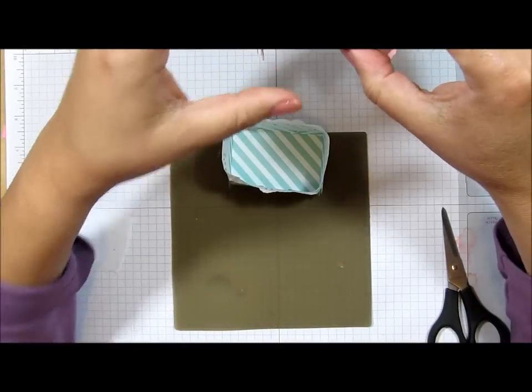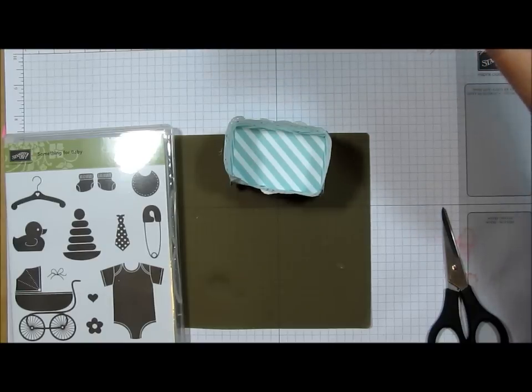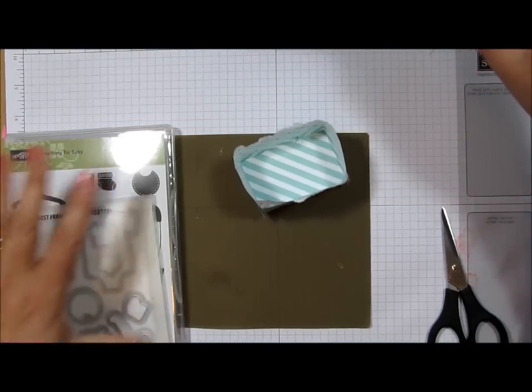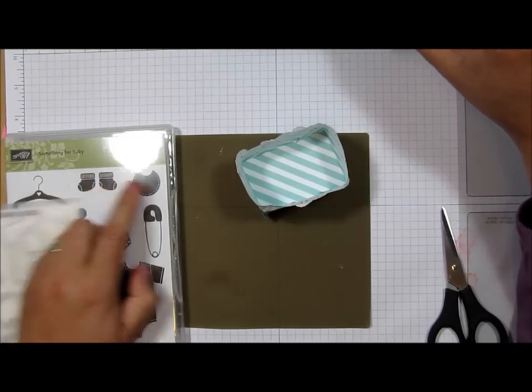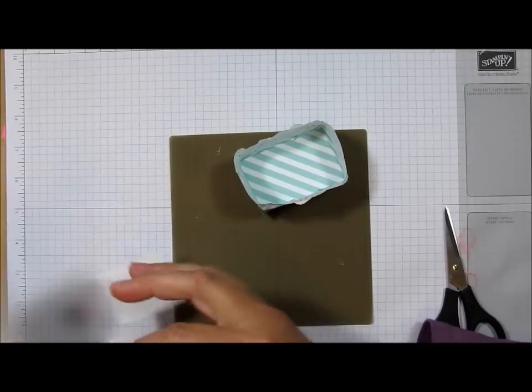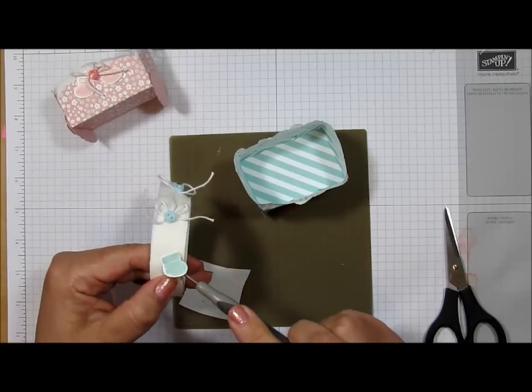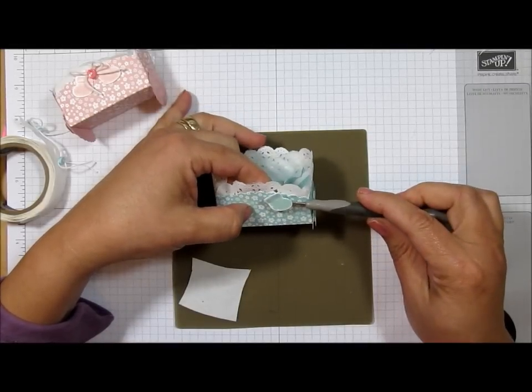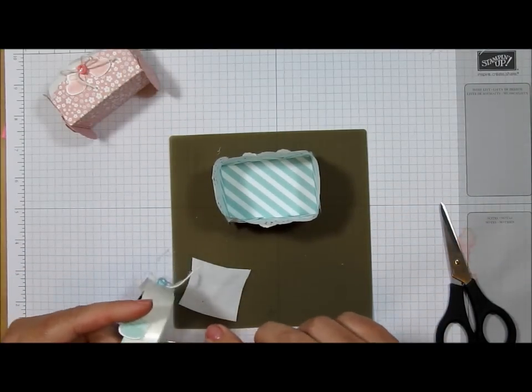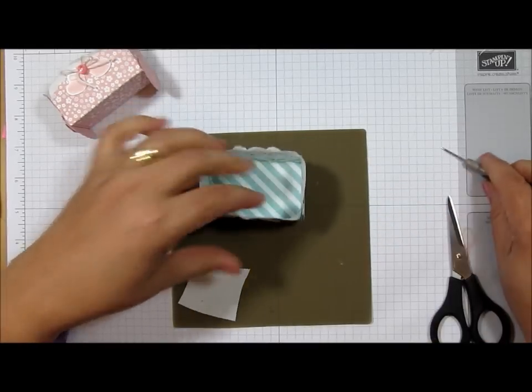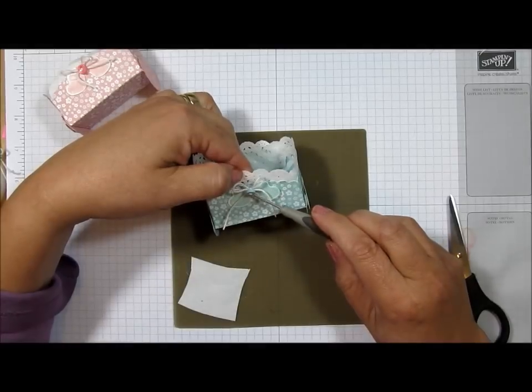So as far as the decorations, once again I used the stamp set Something for Baby, and I used the booties. Now you have to also know that it does have a framelit die that coordinates with this, and if you buy them both as the bundle you can save 15%, which is kind of cool. And so what I did was I stamped the booties and I cut them out with my big shot. And that's what I did for this blue one because I wanted it to be the same. So let's put the booties on the side. Now you do want to make sure that you put whatever you put on one side, put on the other, because if you don't then it's not going to be balanced. It's going to want to lean to one side. So if you're going to decorate it, make sure you have the decorations on both sides. And so from my stash I have this little button, but you can certainly use whatever decorations you want. And I think I'm just going to put the button right here.